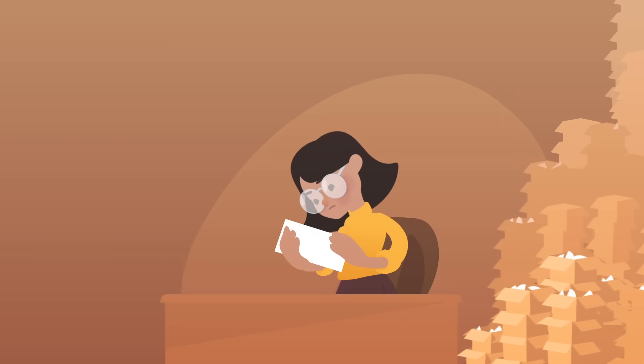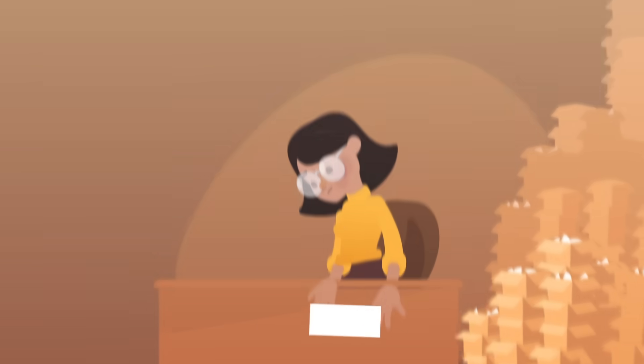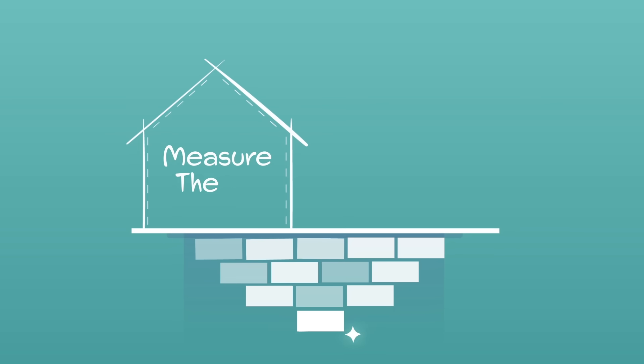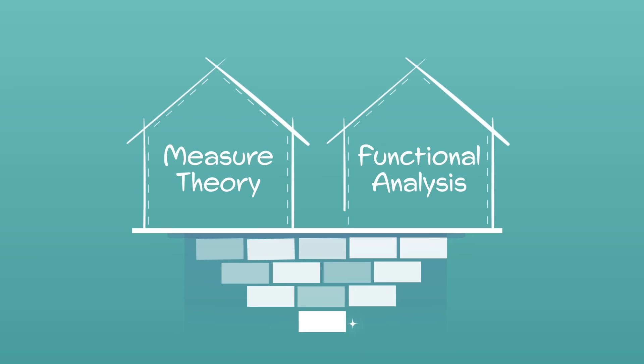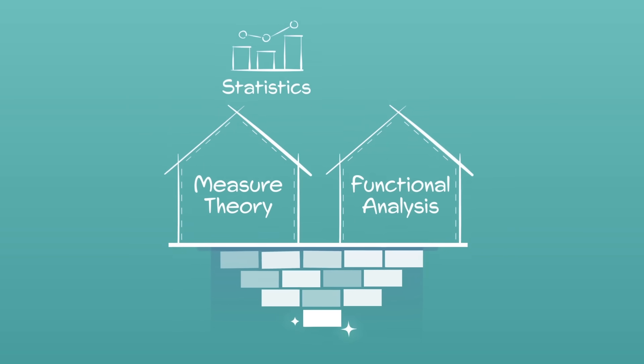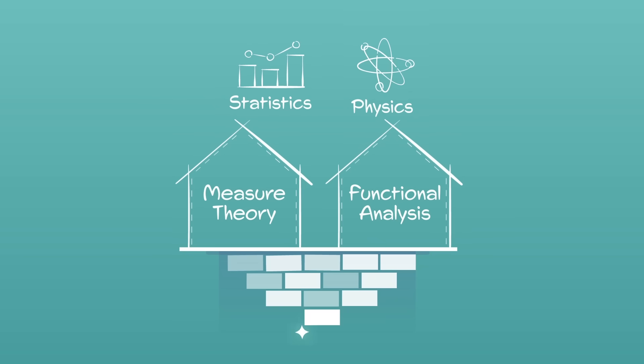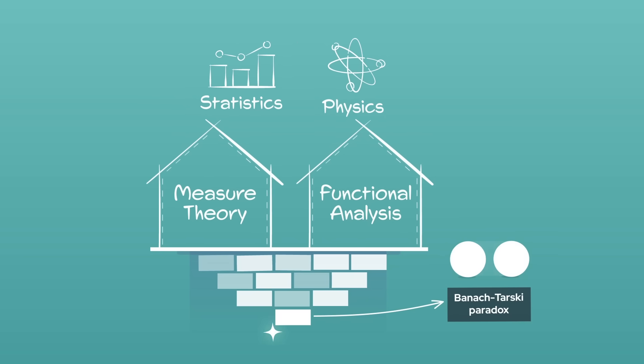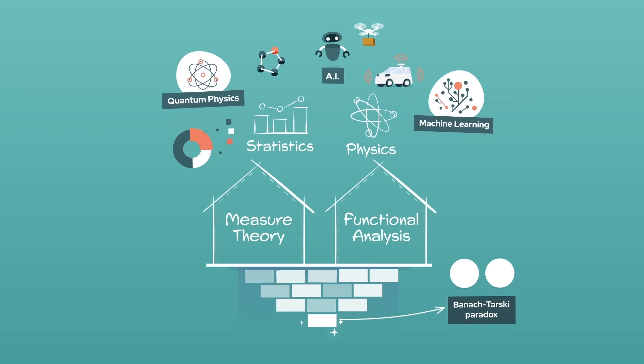If the axiom of choice can lead to such a counterintuitive result, should we just reject it? Mathematicians today say no, because it's load-bearing for a lot of important results in mathematics. Fields like measure theory and functional analysis, which are crucial for statistics and physics, are built upon the axiom of choice. While it leads to some impractical results, it also leads to extremely practical ones.